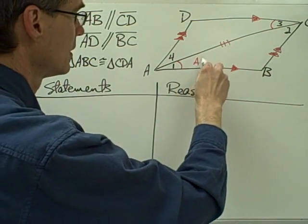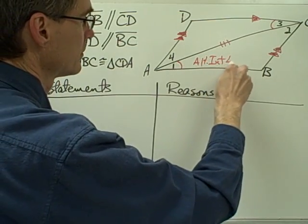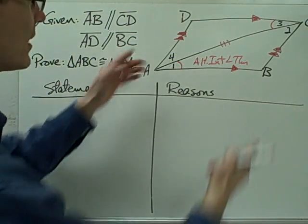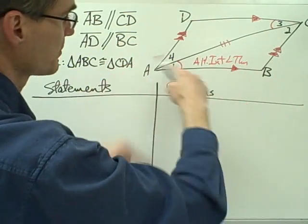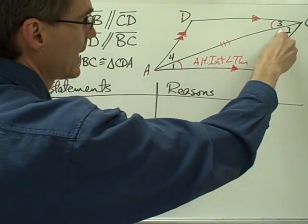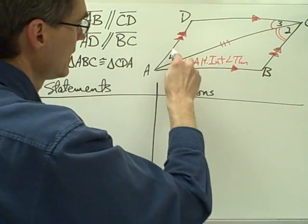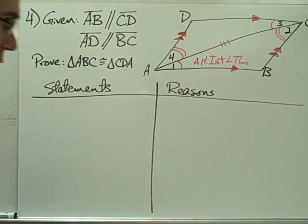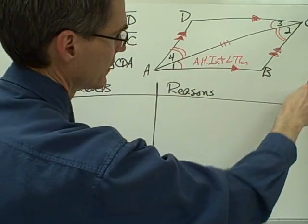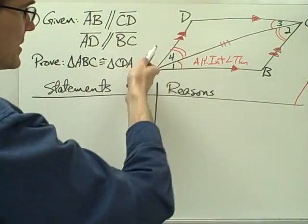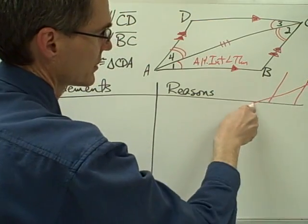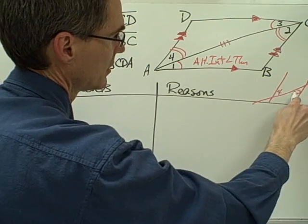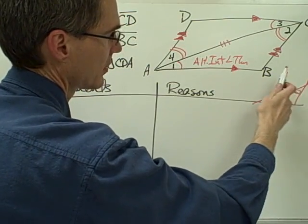So I'm going to use the alternate interior angles theorem to show that these two angles are congruent. Also, since I have these two other lines parallel with the same transversal, angle two is congruent to angle four by the same theorem — these are also alternate interior angles.